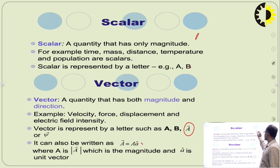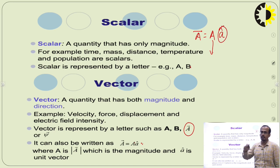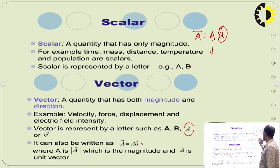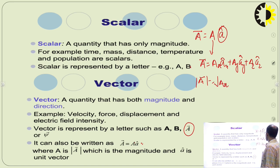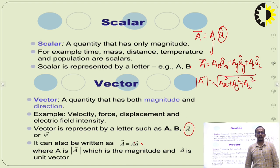If I write vector A as A times A-cap, this means A is the magnitude and A-cap is the unit vector. For finding the magnitude, if vector A is written as Ax·Ax + Ay·Ay + Az·Az, then the magnitude mod of A equals the square root of Ax² + Ay² + Az².